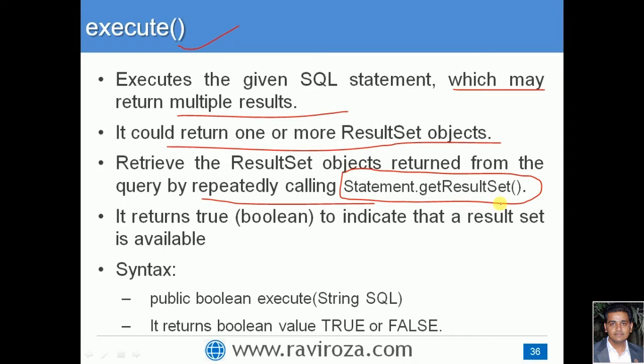As mentioned, the execute() method can return multiple sets of results via the statement's getResultSet() method. It also returns a true value to indicate that a ResultSet is available. The execute() method returns either true or false — true means a ResultSet is available from the query.